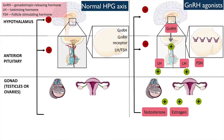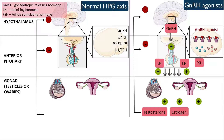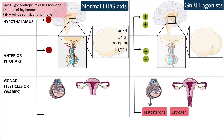GnRH agonists have a strong affinity and mimic the GnRH hormone, binding to the GnRH receptor in the anterior pituitary gland, causing strong and continuous stimulation of the receptors and subsequent release of LH and FSH. This causes an initial flux of the sex hormone.